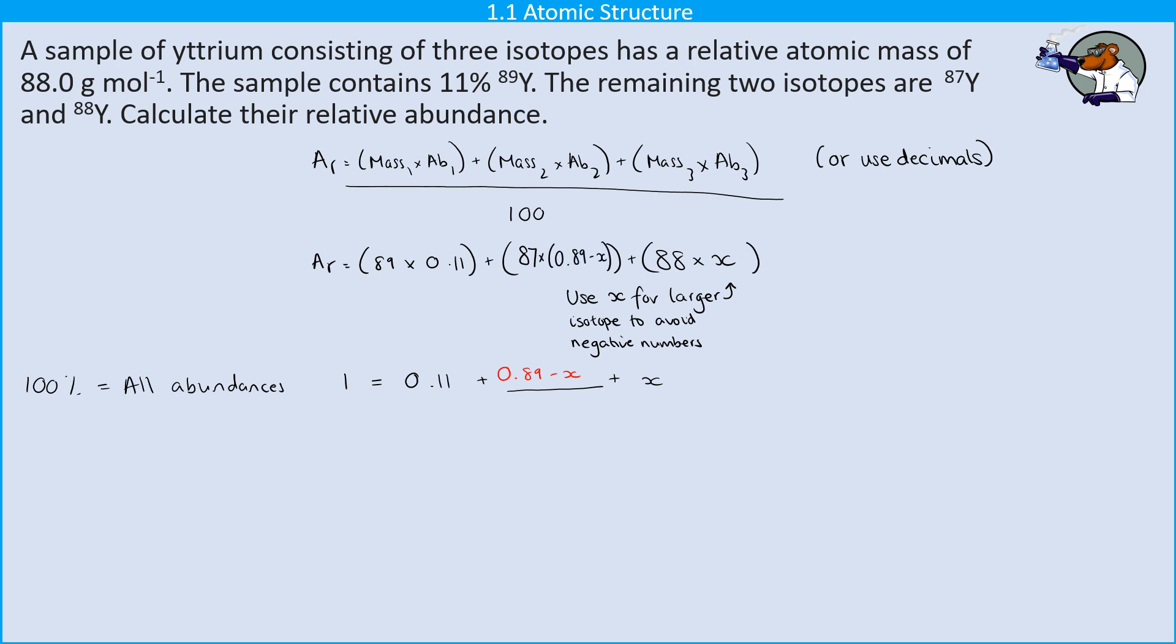So my second isotope is going to have this abundance of 0.89 take away x, or if you were doing it as not decimals that would be 89 take away x and the whole lot over 100. So if I then write out all that lot, I'm going to have the value of the relative atomic mass that I was given in the question is going to be 9.79 plus that whole horrendous expression once we've timesed everything by 87 plus 88x, and now I just need to simplify things.